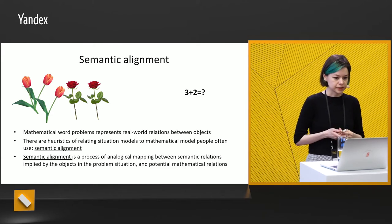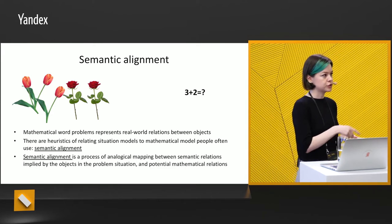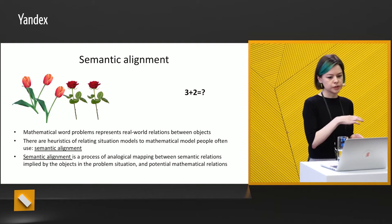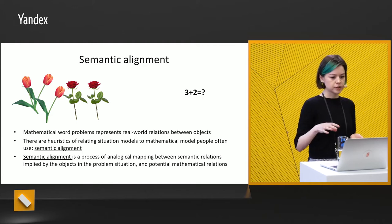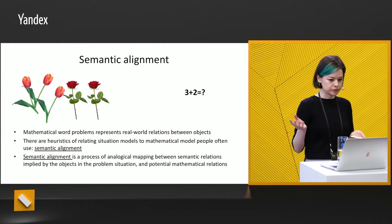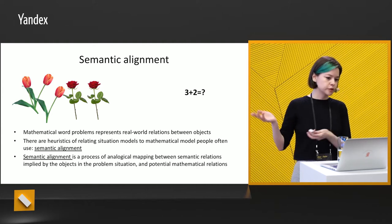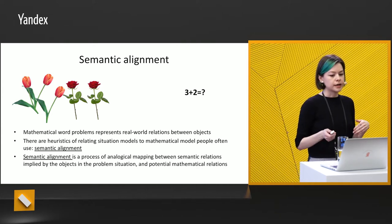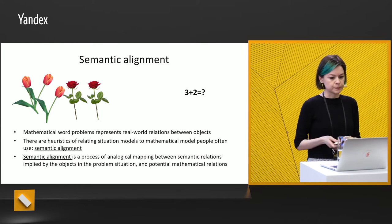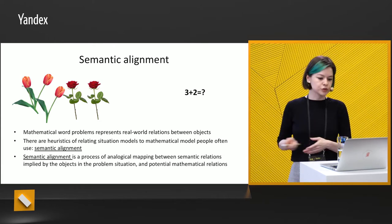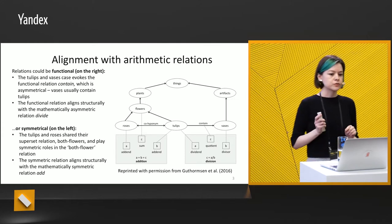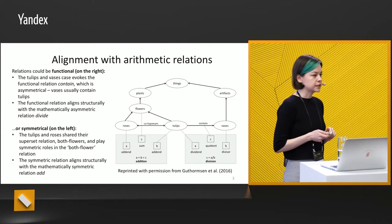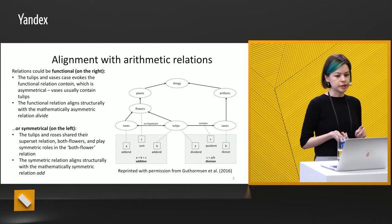So what is semantic alignment? It's a process of analogical mapping between semantic relations implied by objects — between roses, tulips, and so on — and the problem situation and the potential mathematical relation. There are two kinds of semantic alignment. First of all, this is alignment with arithmetic relations.